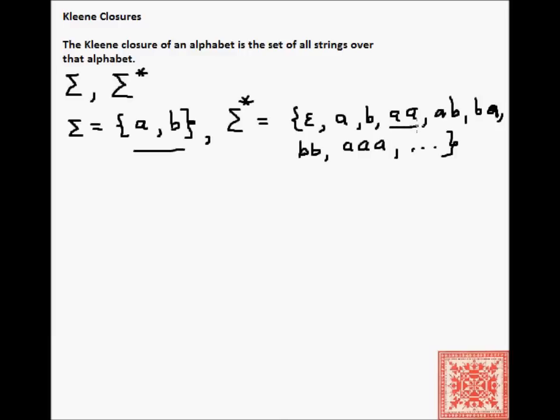Although the alphabet is finite — it consists of only two symbols, a and b — the Kleene closure of that alphabet, sigma star, is infinite.